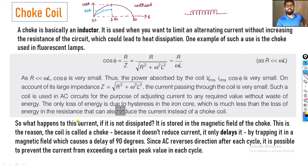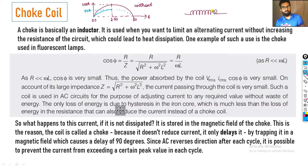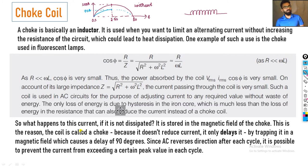अगर current का growth delay हो गया, मतलब उसी time में 0 से लेके 2.5 seconds में current 0 से 70 तक ही पहुंच पाएगा। उसके बाद current गिरना चालू करेगा। Overall देखो — बिना inductor के, peak value 100 तक पहुंच रहा था, लेकिन inductor की presence में current का value सिर्फ 70 तक ही पहुंच सकता है। तो हमने peak value को reduce कर दिया। इसीलिए हम इसको choke coil बुलाते हैं।